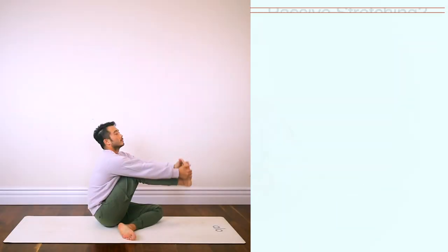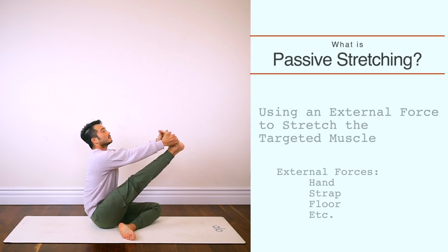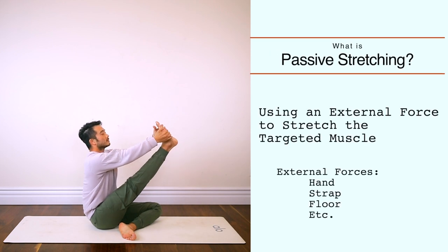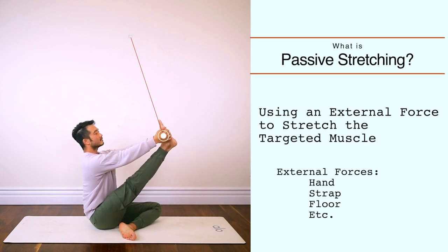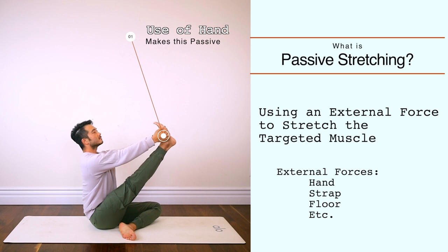Passive stretching is when you're using an external force — like your hand or the floor — in order to stretch a muscle group. Something like this would be considered a passive stretch because you are using your hand in order to stretch out the hamstring muscle.